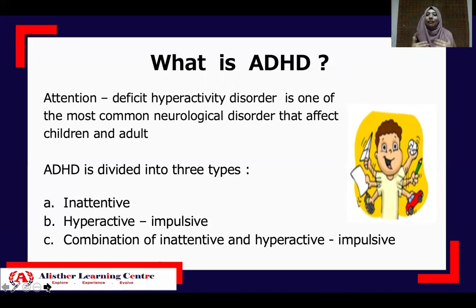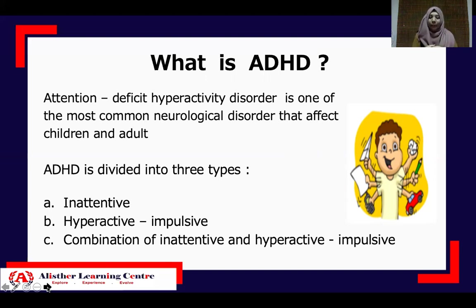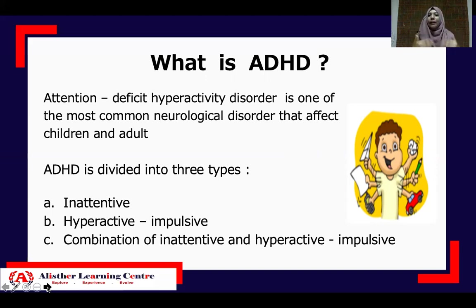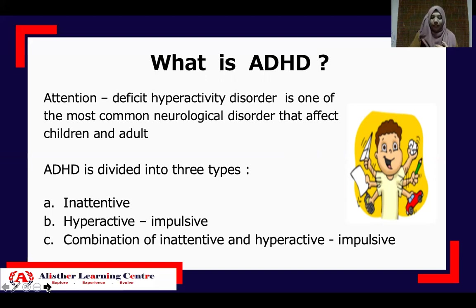Hyperactive-impulsive means that they are risk takers, always interrupting, have difficulty to stay on a task, never seem to slow down, and always on the go. The combination of inattentive and hyperactive-impulsive means they have an inability to focus and inability to stay still or control behavior.